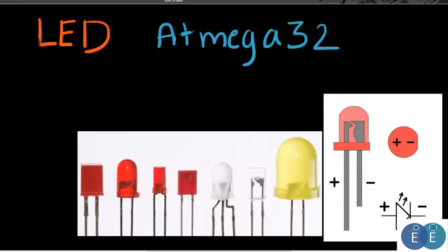With all the theory background covered in the previous videos, this will be the first hands-on video. In this video we will be interfacing a light emitting diode to the ATmega32 AVR microcontroller. An LED is basically a light emitting diode which, when powered up, emits light. It is available in various colors and sizes, and we can do a lot of fancy stuff with LEDs.